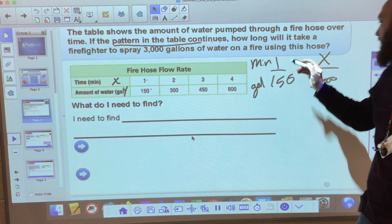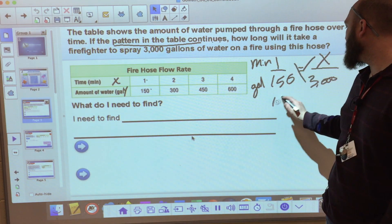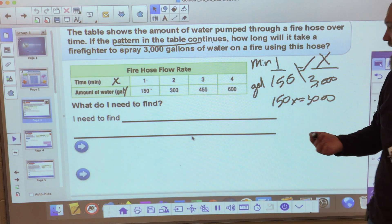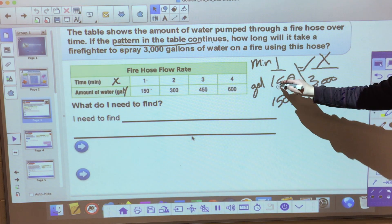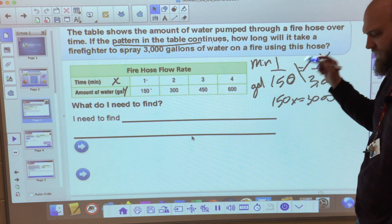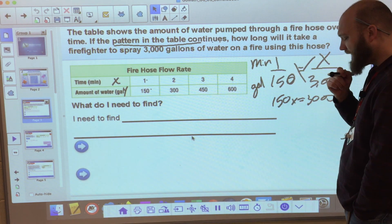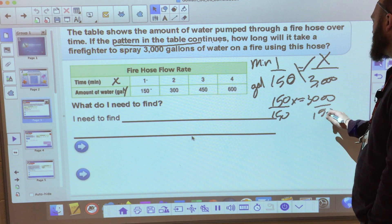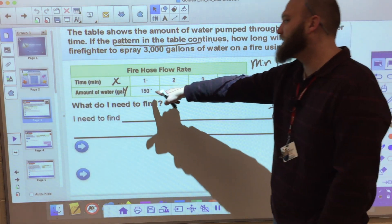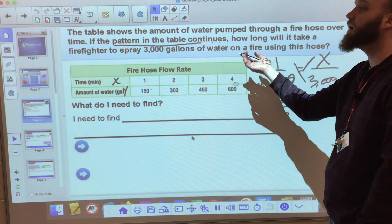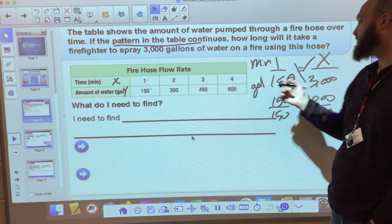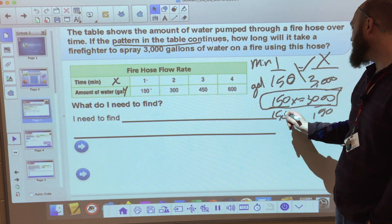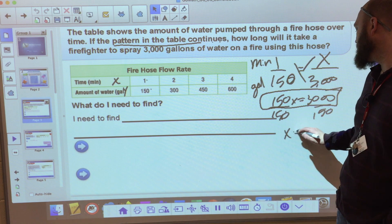This absolutely works. I could cross multiply, and I get 150x equals 3,000. And that's something I can solve. Or I could say, how many times can 150 go into 3,000? And what I find out is 20. 20 is the case.